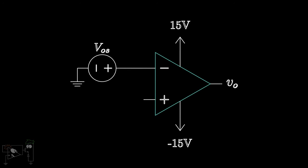Offset voltages can range from 1 millivolt for low-precision op-amps and can go as low to a few microvolts for high-precision op-amps.